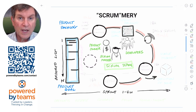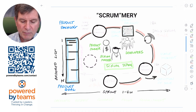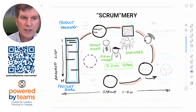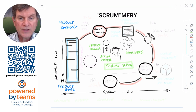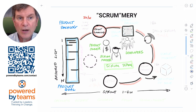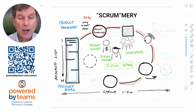A sprint begins with the event known as sprint planning. All of the events have time boxes, but sprint planning only happens once at the beginning of the sprint, so you might scale it with the length of the sprint. The Scrum Guide says sprint planning is up to eight hours for a one-month sprint, which works out to about two hours per week of your sprint length. There are three topics: a why, a what, and a how.